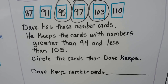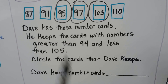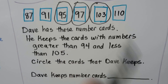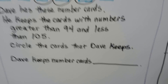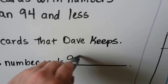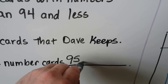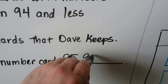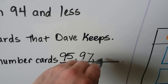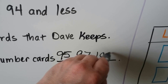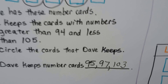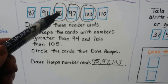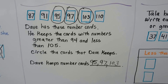Dave keeps the number cards 95, 97, and 103. Those are the ones he keeps.